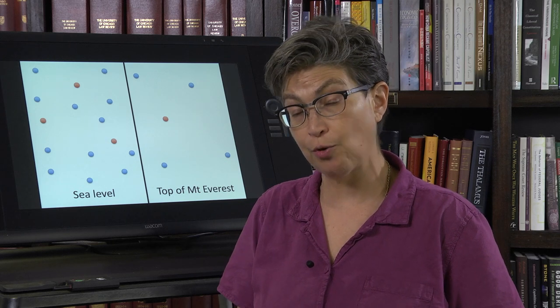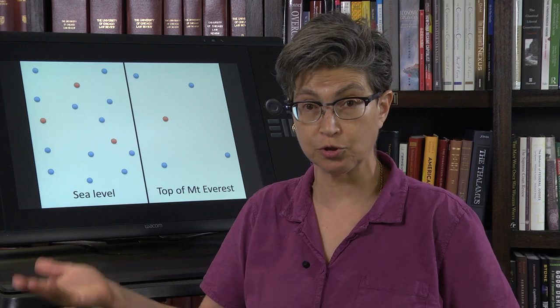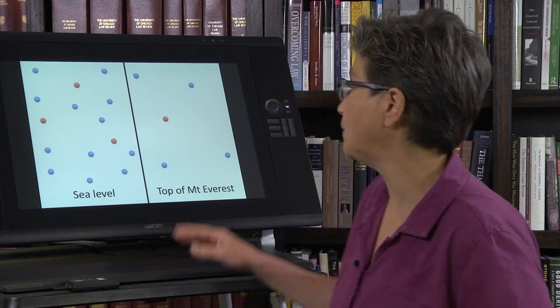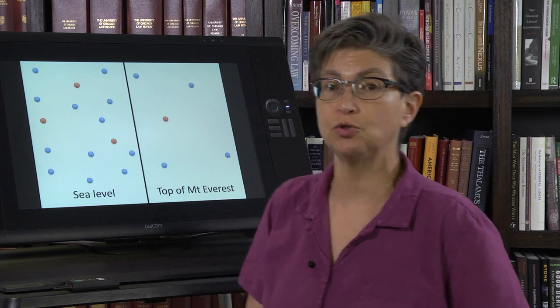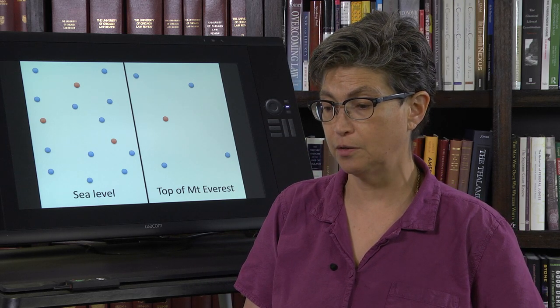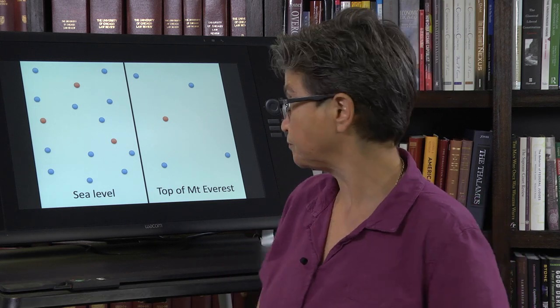Another situation where you have less oxygen than normal is getting onto an airplane, a commercial airplane, where it's around 15% instead of 20%. Up at Mount Everest, it's too low even for a person to exist for too long.